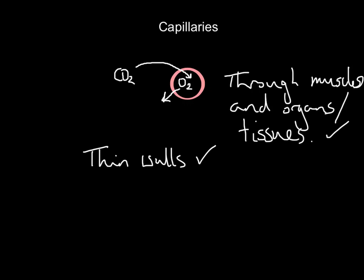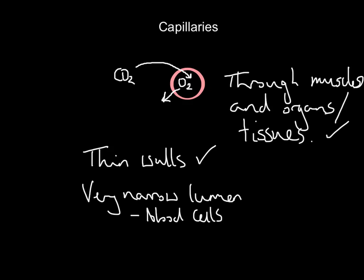Capillaries also have a very narrow lumen — so narrow that red blood cells flow through in single file, with only one red blood cell able to pass at a time. This allows maximum oxygen diffusion into the muscles, because one red blood cell can release all of its oxygen and pick up lots of carbon dioxide before the next one passes through.